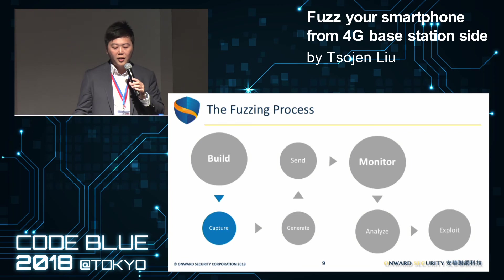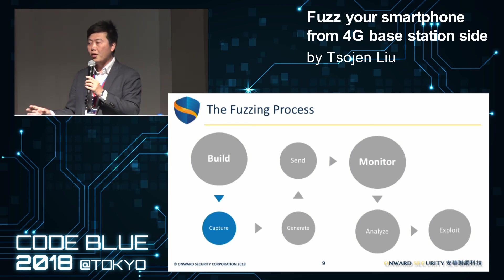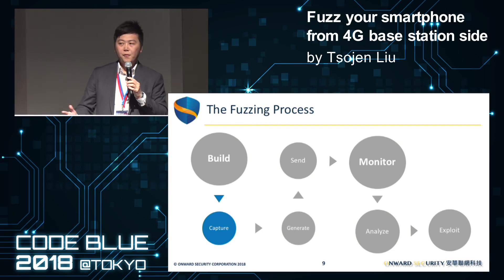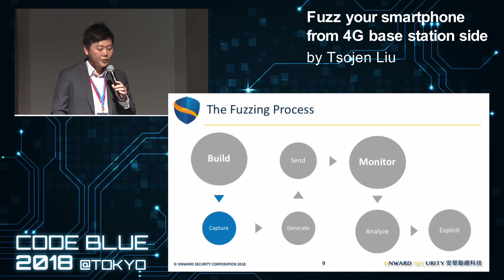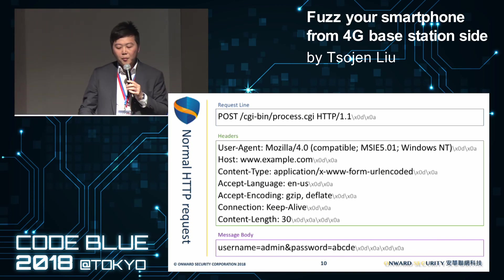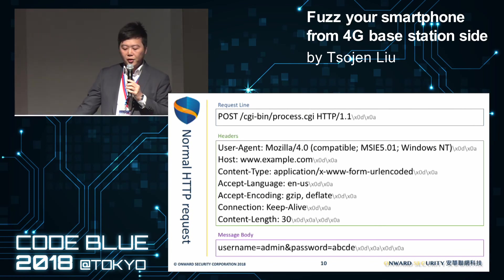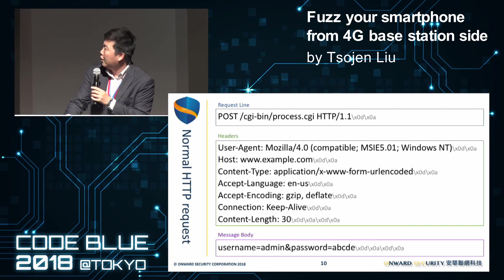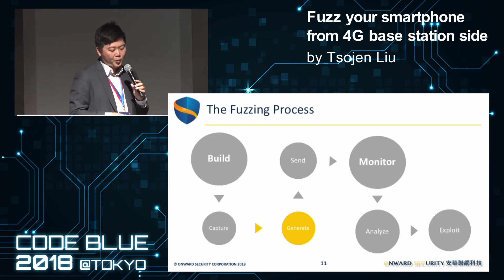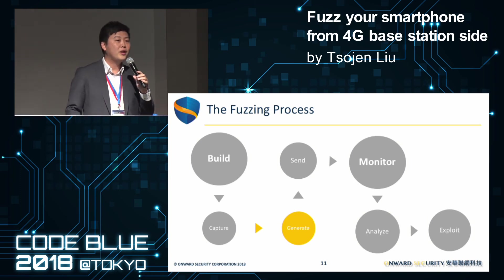Once we have the environment, we can capture packets from it, especially for proprietary protocols — this is the only way to get the data. For standard protocols, you can also find information from RFC documents. Here is an example: this is a simple HTTP request sending HTTP POST data to a CGI script called process.cgi. This request includes a request line, headers, and message body. In this step, I will use the HTTP POST data to describe how to generate fuzzing patterns.